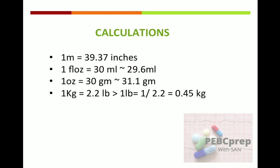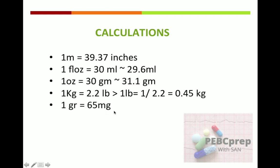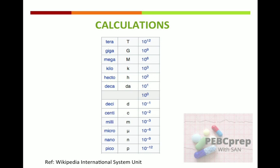One kg equals 2.2 pounds. You have to remember this. One pound equals 1 divided by 2.2, which is 0.45 — you can calculate it yourself in the exam, you don't need to remember each value, just remember one kg equals 2.2 pounds. One grain equals 65 milligrams. One teaspoon equals 5 ml. One tablespoon equals 15 ml.